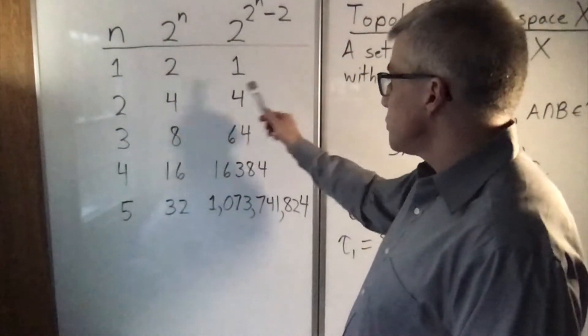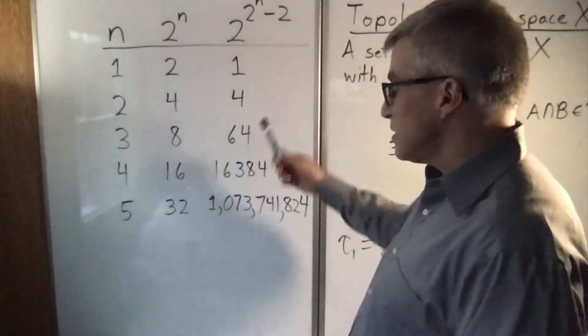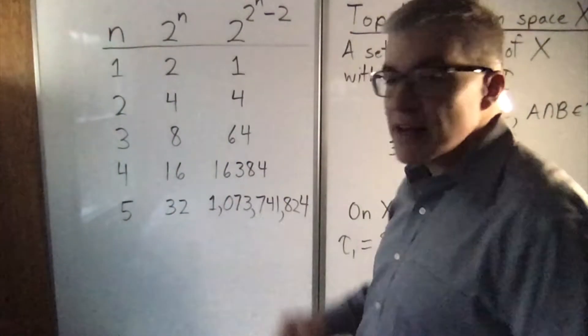When n is 1 it's 1, when n is 2 it's 4, at 3 it's 64, at 4 it's over 16,000, at 5 it's over a billion.